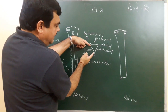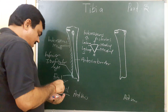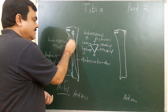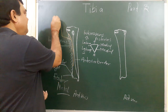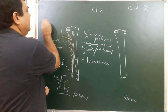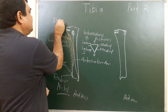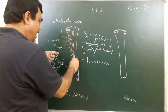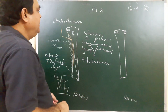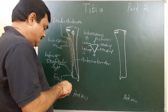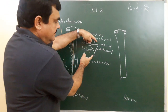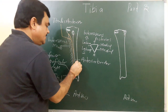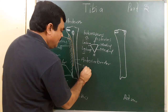So this lateral surface — in the upper two-thirds part of the lateral surface — the tibialis anterior muscle takes origin. And the lower part of the lateral surface is subcutaneous.